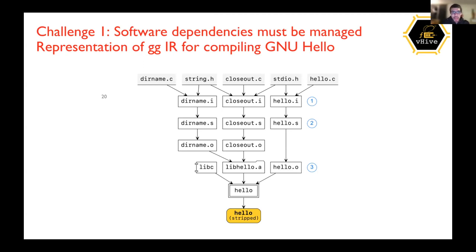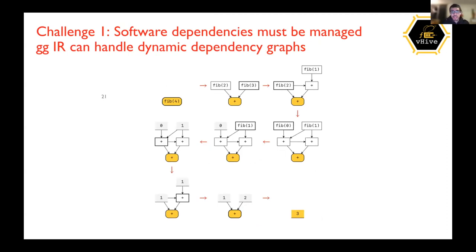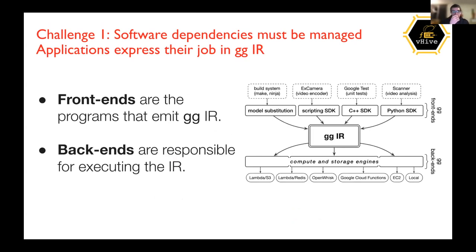Applications express their jobs using what's called GGIR — the thunk abstraction. The front end emits this GGIR and the backend is responsible for computing it. The two are separate from each other, meaning they can be developed and expanded separately as the application evolves. This separation is what allows Gigi to plug into a platform such as VHive because its backends are so accessible.